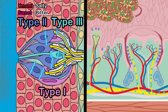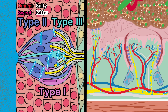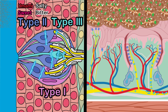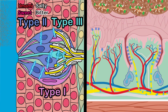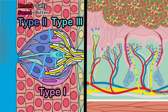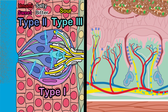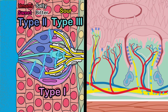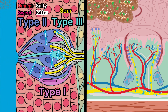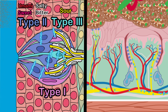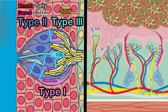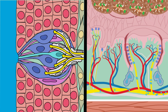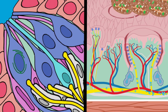Type 3 taste cells are the least numerous, representing 2 to 20% of the cells in a taste bud. These cells sense sour tastes and also respond secondarily to other taste stimuli via cell-to-cell paracrine communication within the taste bud.